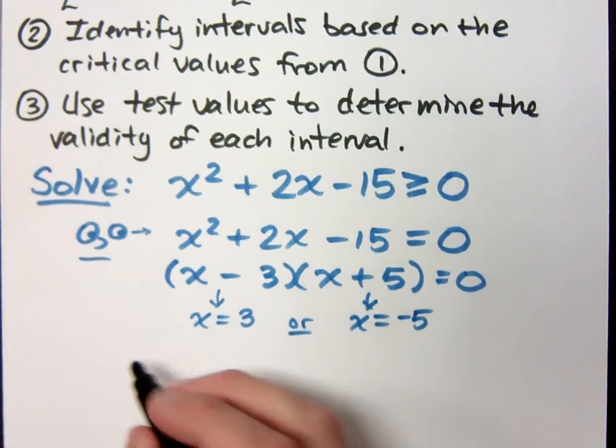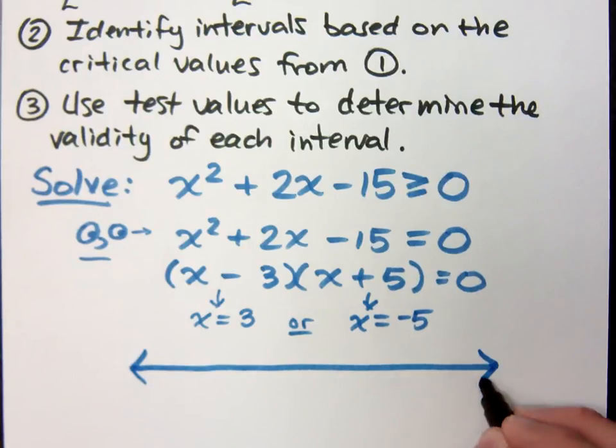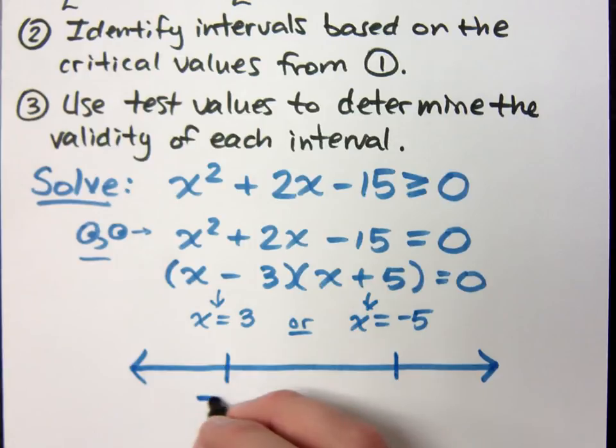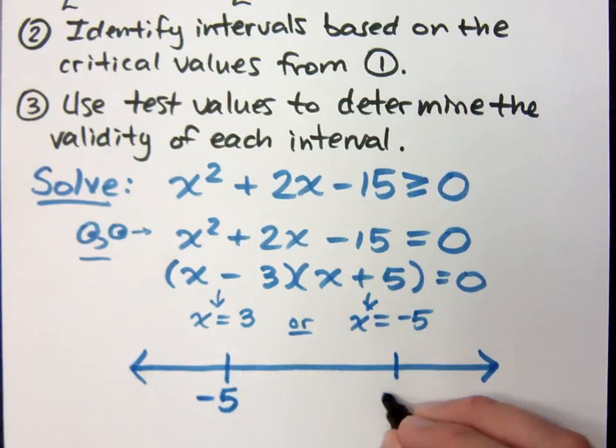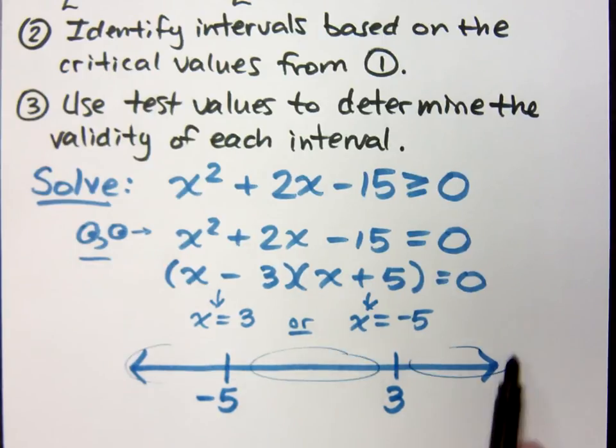Step two is basically look at this on the number line. We look at this on the number line and pay attention to the order that I have. Negative 5 is on the left, 3 is more on the right. These guys create 3 intervals for me. I've got 1, 2, 3 intervals that I'm going to check.